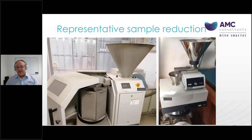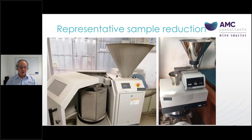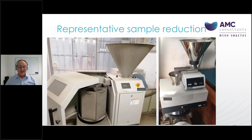When we get to the assay lab we've got a whole different set of circumstances — it's a lot more controlled. The sampling can be managed, protocols put in place, and differences analyzed across systems. Labs these days in general have pretty good systems, but you still need to ask the questions. Visit the lab, build a relationship with the lab manager, walk in unexpectedly and say you want to look around. Is there dust everywhere? Are they using appropriate rotary splitters to ensure representativity of the sample from coarse to pulp level? All of these things aid in getting a representative sample.